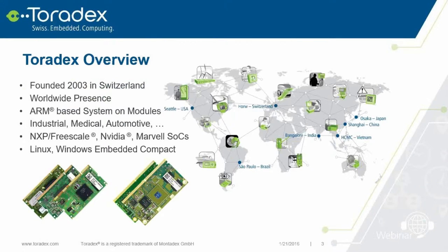First, a short about Toradex: it was founded in 2003 in Switzerland — and if you ask yourself what kind of accent I have, that's a Swiss accent. I work now in the Seattle office and we have offices around the world. All these offices have local warehouse and local technical staff, so they can support you all over the world.